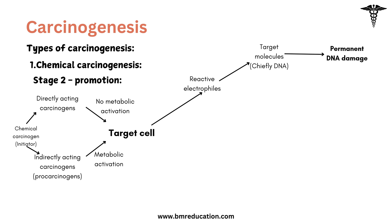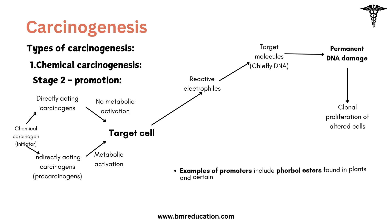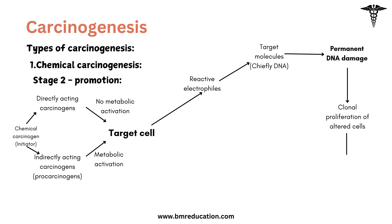Following initiation, we move to promotion. Promoters are substances or conditions that encourage the proliferation of initiated cells. Promoters do not damage DNA directly but enhance the effect of the initial damage by promoting cell division of the altered cells. Examples of promoters include phorbol esters found in plants and certain hormones. This stage increases the number of initiated cells, raising the chances of genetic changes.